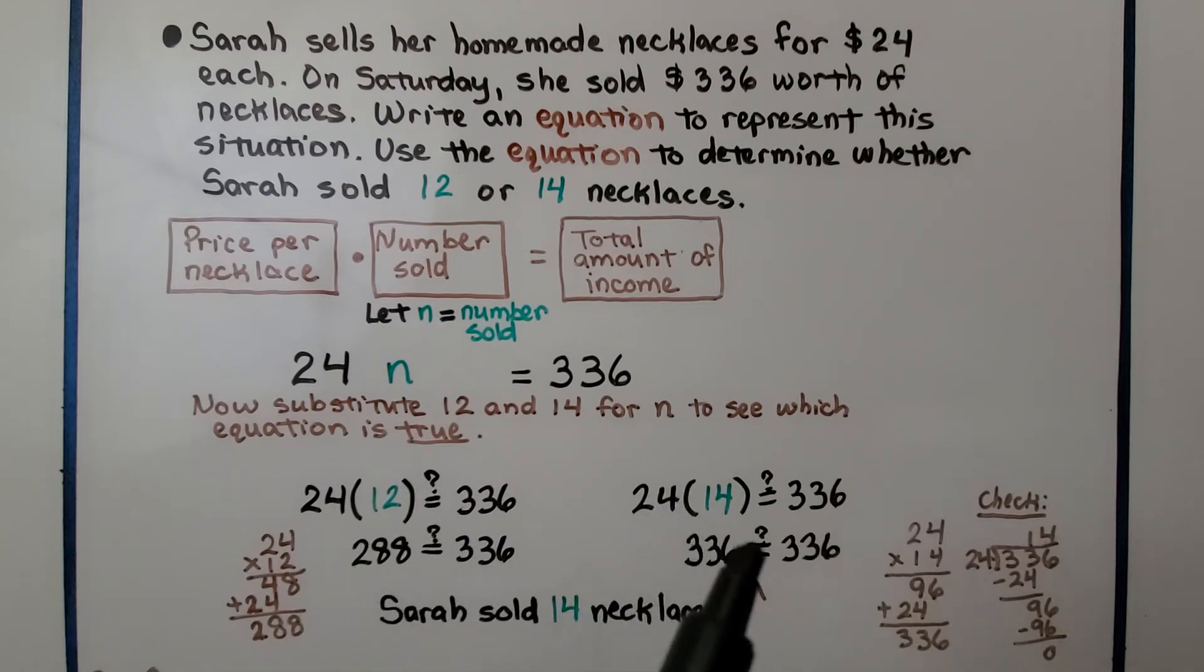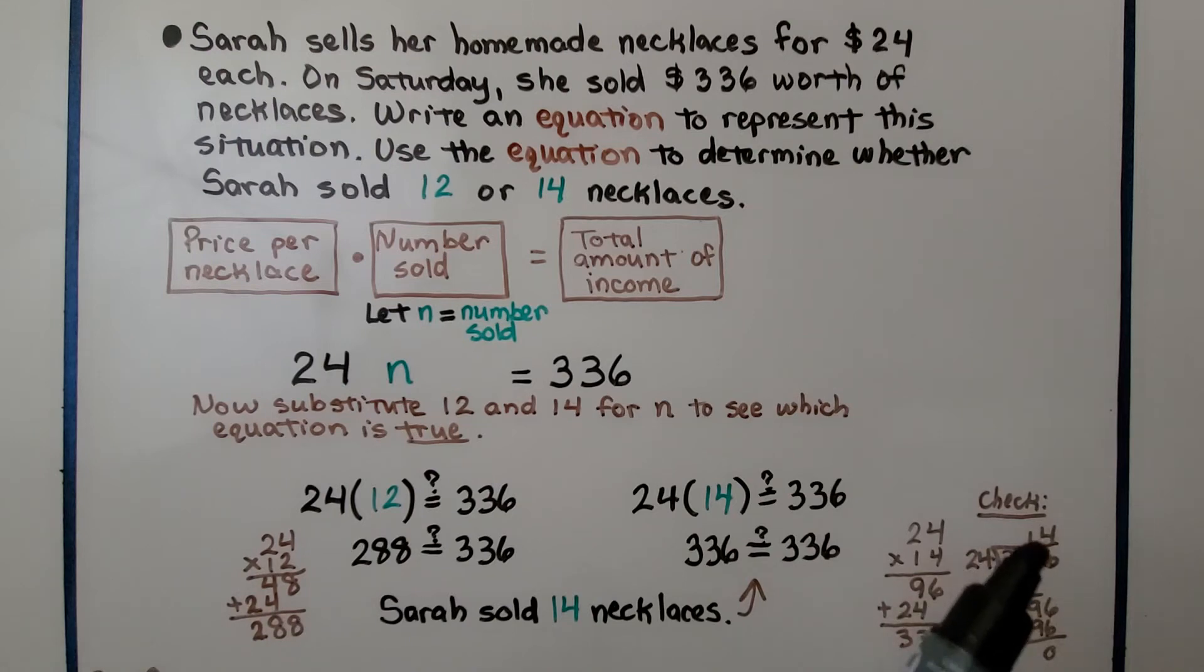24 times 14. Is that equal to $336? We do 24 times 14. And yes, it is equal to $336. We have $336 is equal to $336. Yes, this is true. So, we know Sarah sold 14 necklaces. And we can double check our math by doing division. We can divide $336 by 24. And if we get 14, we know we did our math correctly.